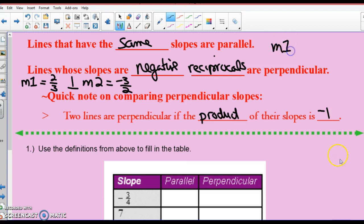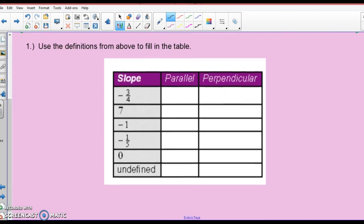Flip it and change the sign. Reciprocal. Flip it and change the sign. So these two lines are perpendicular. A quick tip note on comparing perpendicular lines. Two lines are perpendicular if the product of their slope is negative 1.